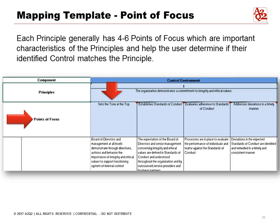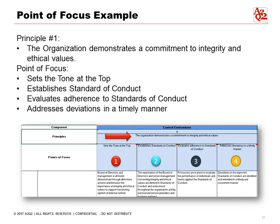You'll notice that each principle generally has four to six points of focus that are important to the characteristics, and we as users can then read them. We've also added details. Here's an example of principle one, where the organization demonstrates a commitment to integrity and ethical values. The points of focus — there are four — you can see on the screen, including 'sets the tone at the top.' These are texts taken directly from the framework itself, shortened to fit into Excel.